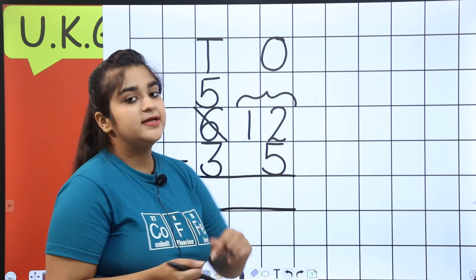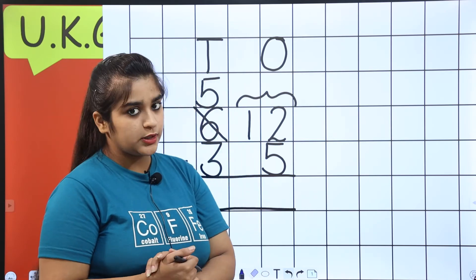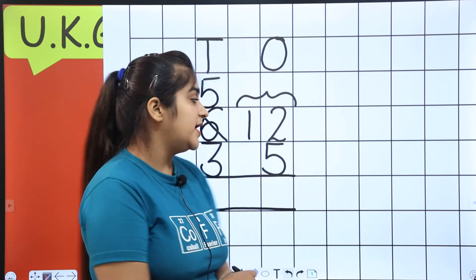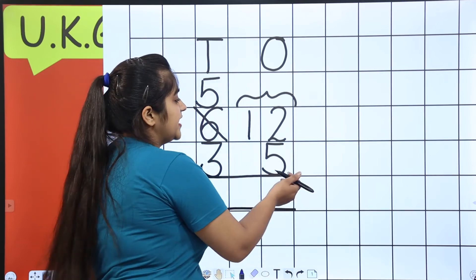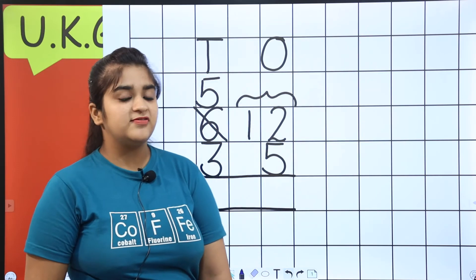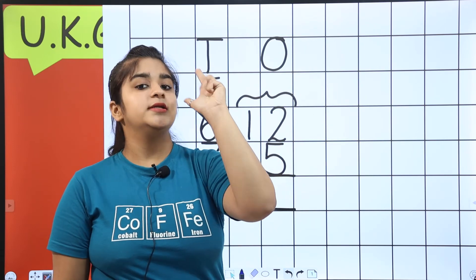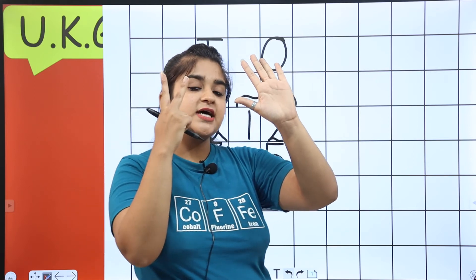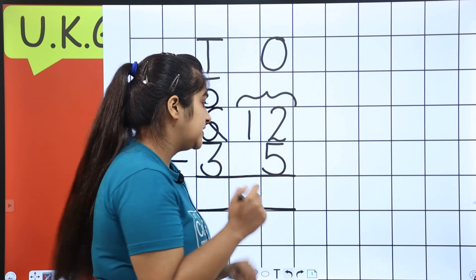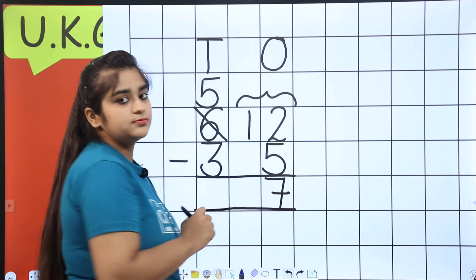Either, now, you draw 12 lines. Cut 5 from them, then count. Otherwise, the second method is that the lower digit, count it up to the upper one. How? Count 5 up to 12. After 5, 6, 7, 8, 9, 10, 11 and 12. How many fingers? 7. So what's the answer? 7. Done?